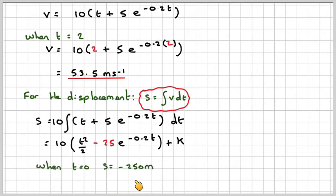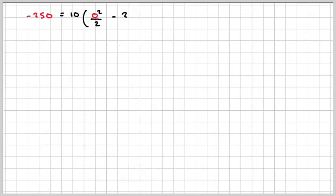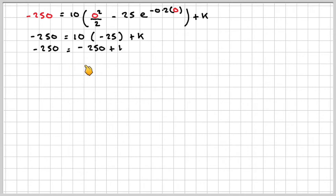So when t is 0, s is minus 150. We get minus 150 is 10 times 0 squared over 2 minus 25e to the minus 0.2 times 0 plus k. Writing that out again, this bit here is 0, and then here we're just going to get, this is going to be 1, and that will leave this 1 times minus 25. So we're going to have minus 150 is equal to minus 25 plus k. That means that k is also equal to minus 125.